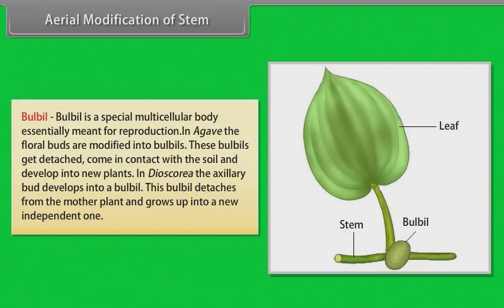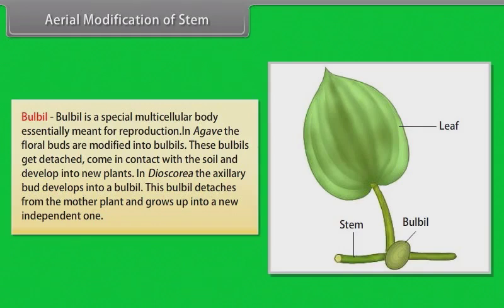Bulbil is a special multicellular body essentially meant for reproduction. In Agave, the floral buds are modified into bulbils. These bulbils get detached, come in contact with the soil and develop into new plants. In Dioscorea, the axillary bud develops into a bulbil, which detaches from the mother plant and grows up into a new independent one.